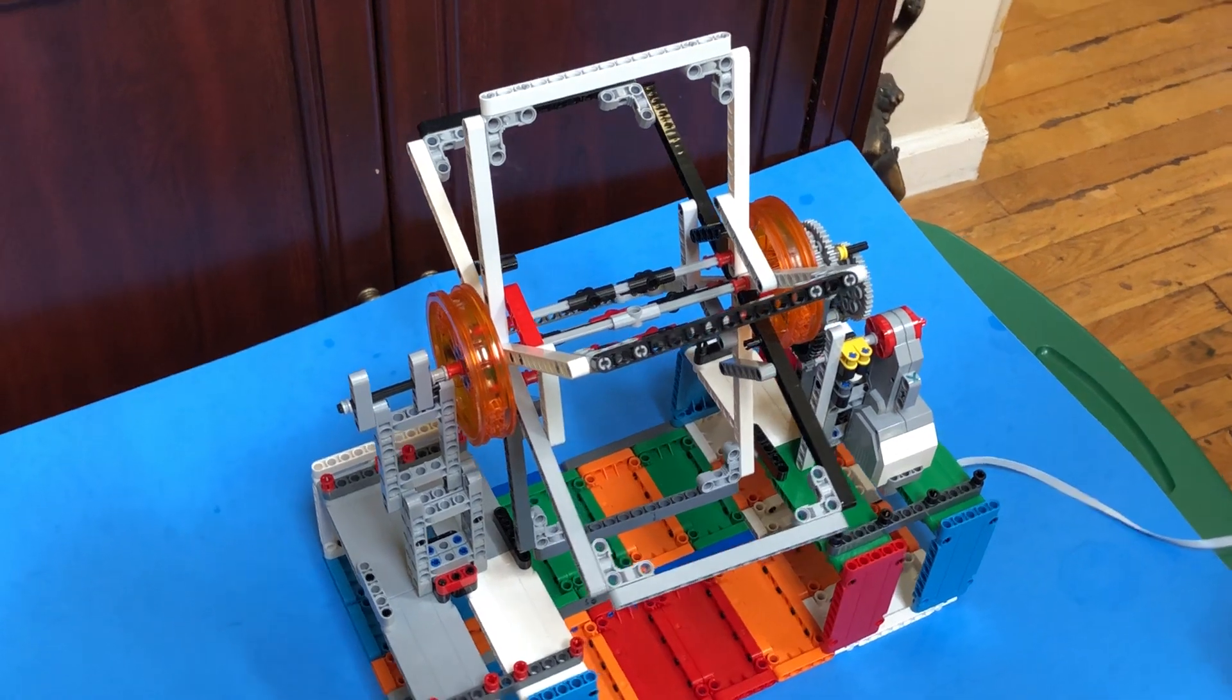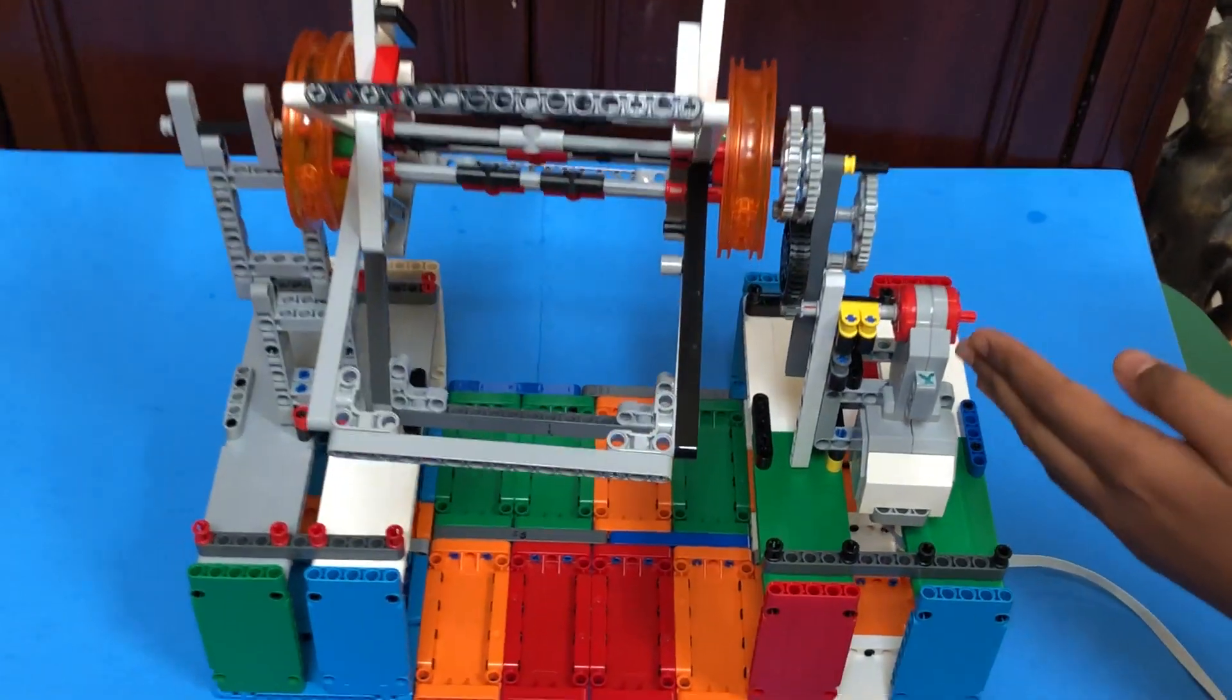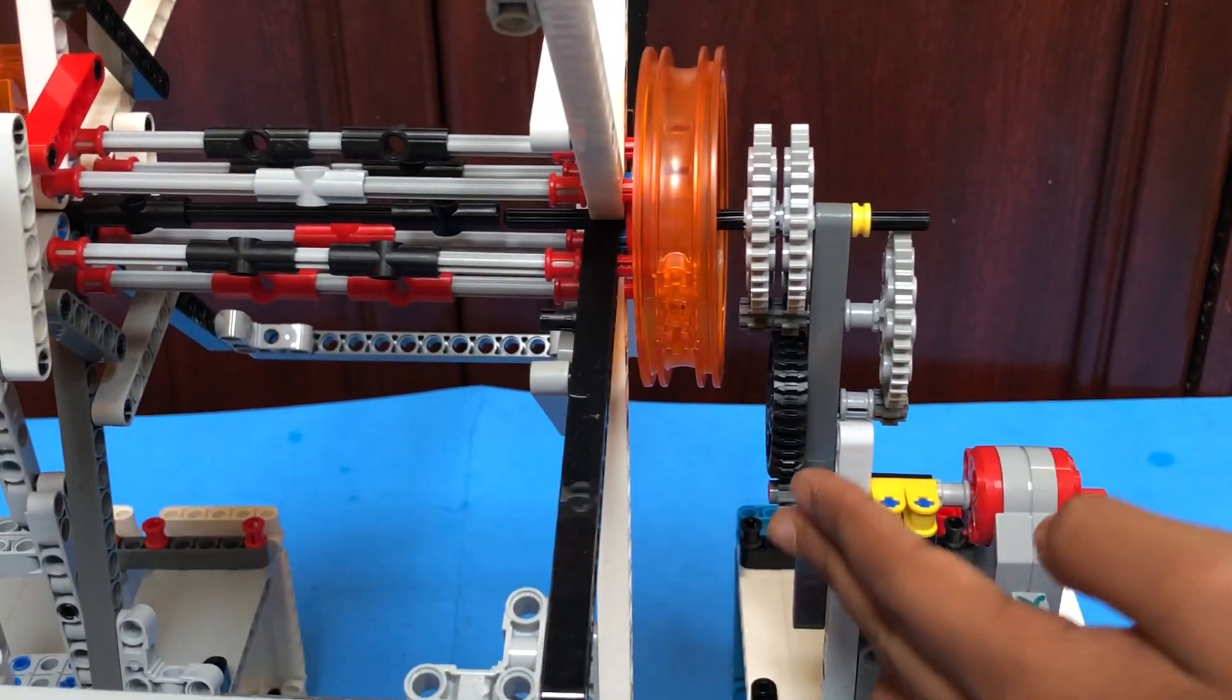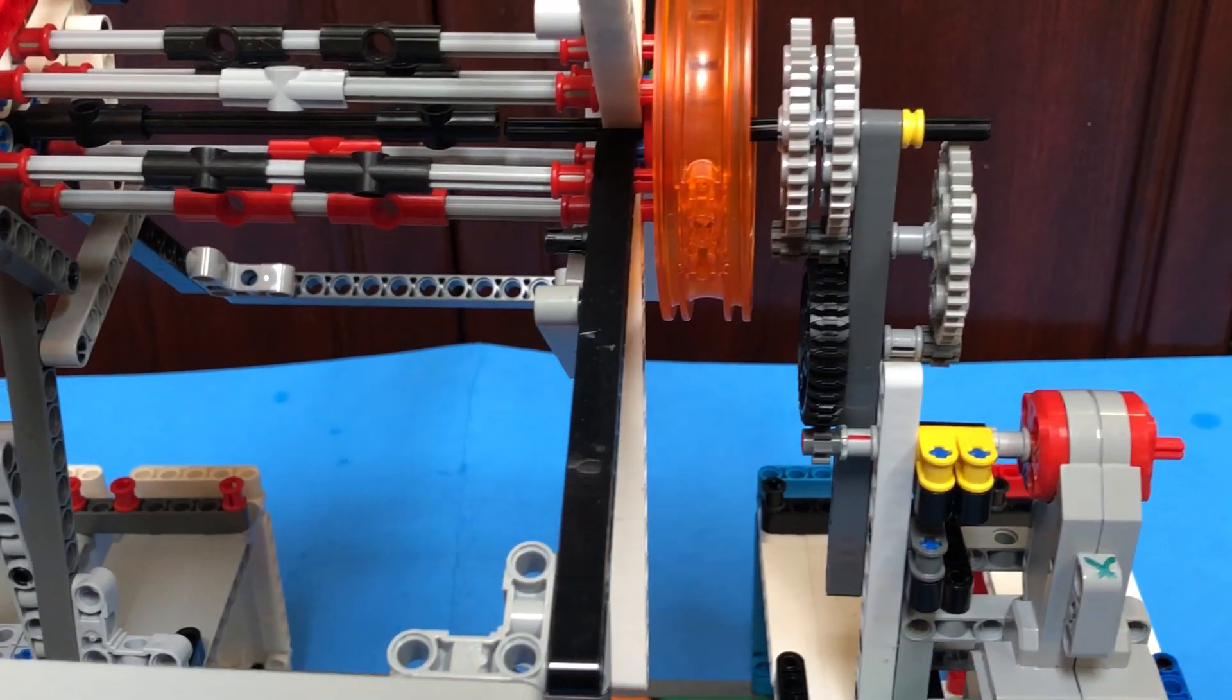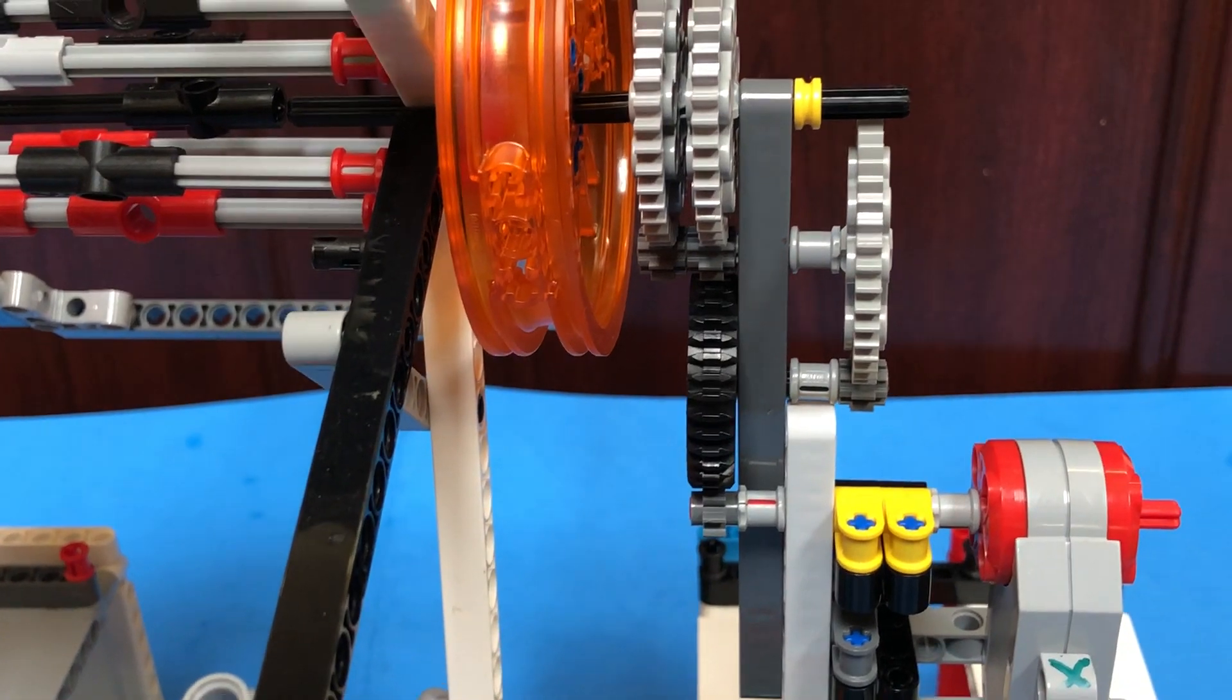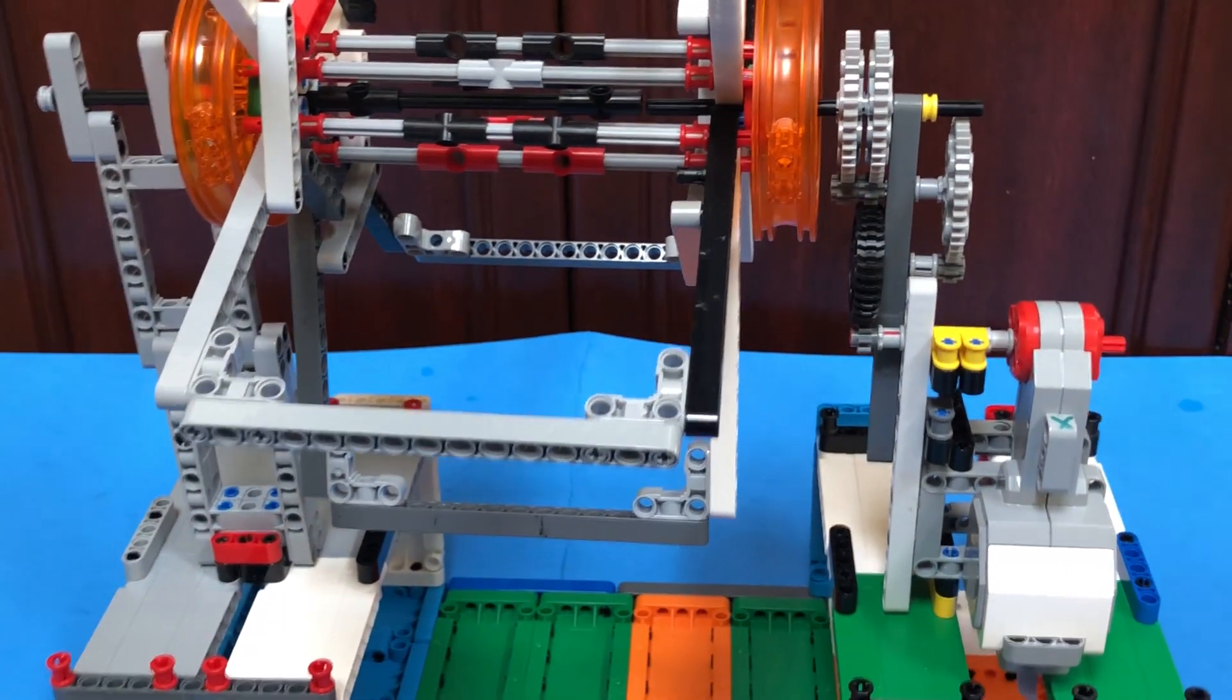Clinostats are supposed to be slow, so you have to use a very high gear ratio. The gear ratio shown here combines three different gear ratios of 1 to 4, 1 to 5, and 1 to 5. When you multiply these gear ratios, you get 1 to 100. That means that this clinostat is very slow, but it's also very powerful.